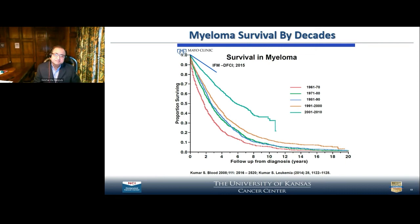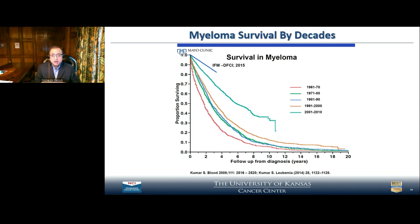When I was in med school, average life expectancy was around two and a half to three years. Now it's not unusual in my practice to see patients 15 to 20 years out still doing very well. Survival in myeloma has improved over several decades, and now at least 15 to 20 percent of patients are getting a plateau — no sign of any myeloma nine, ten, or twelve years after diagnosis. Are they cured? I hope so. I cautiously tell them most likely you're cured, but we need to keep pushing the envelope.